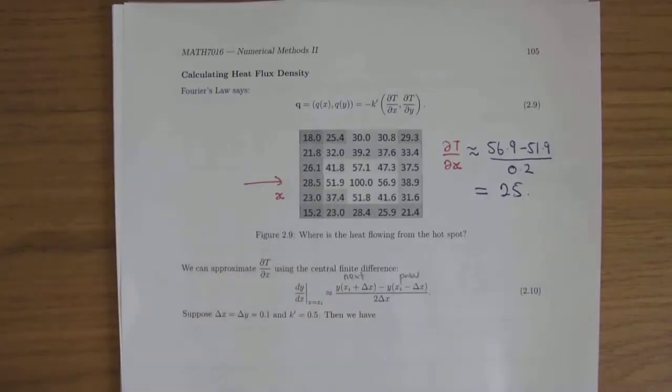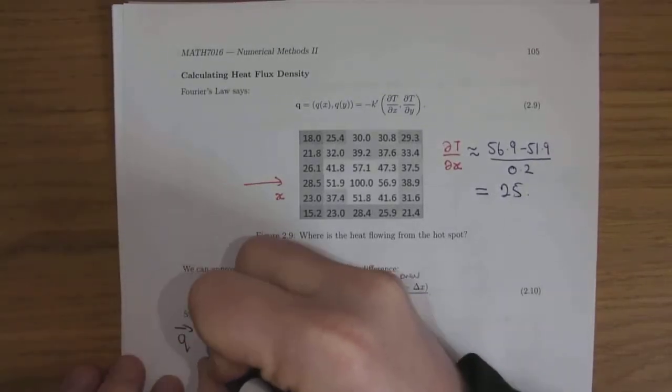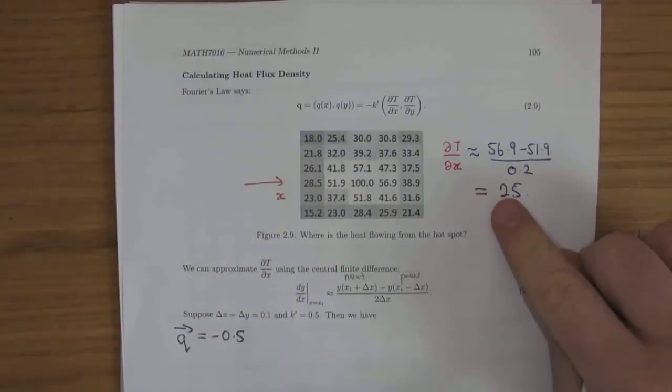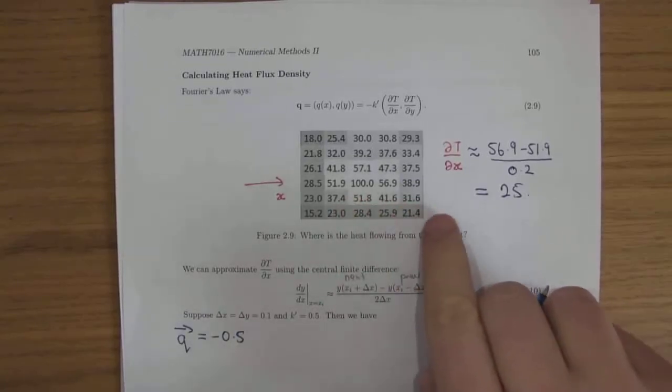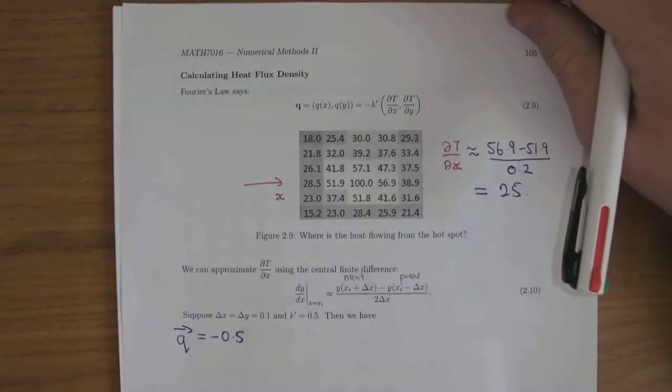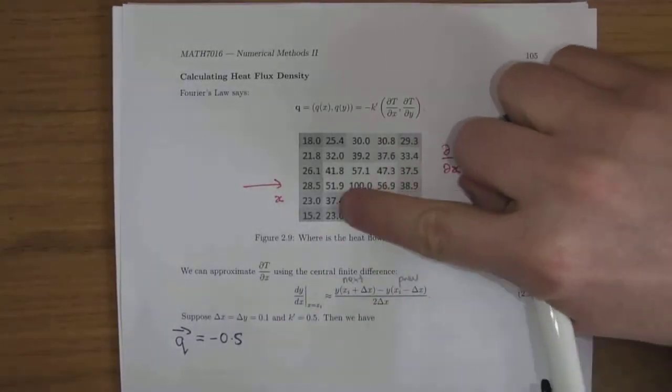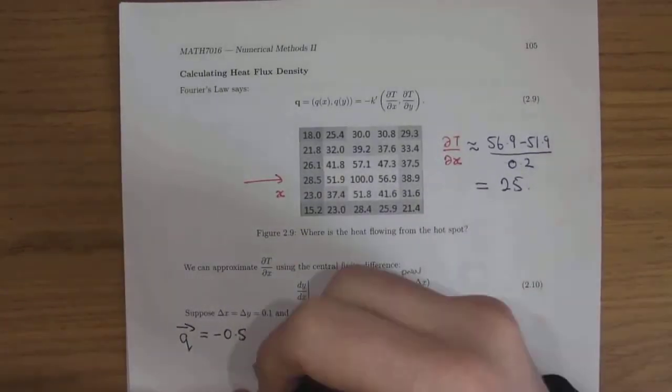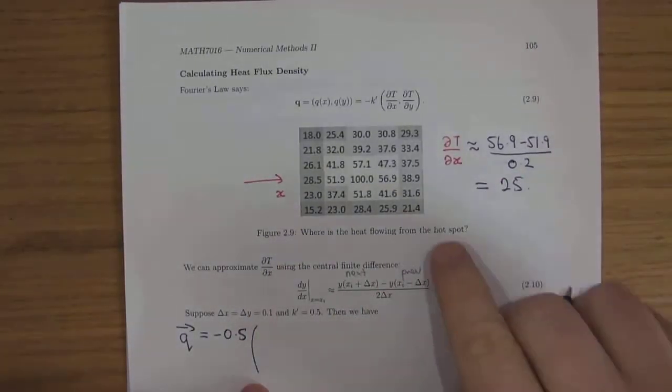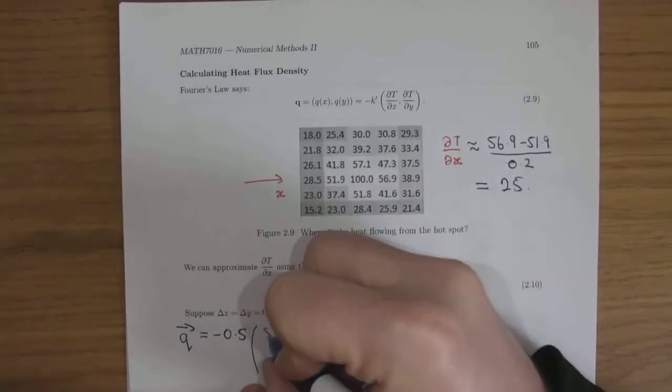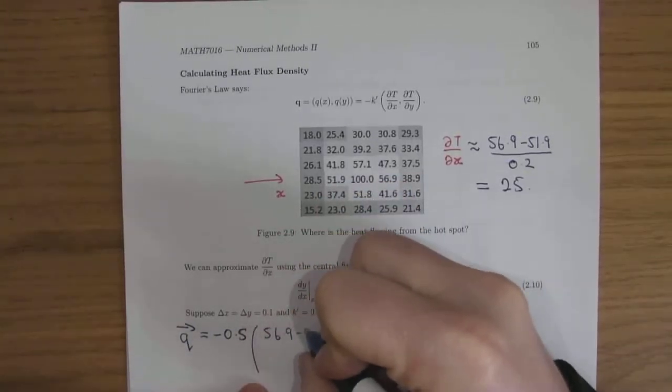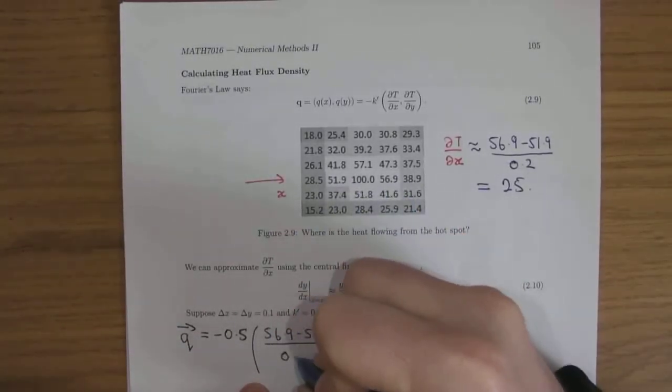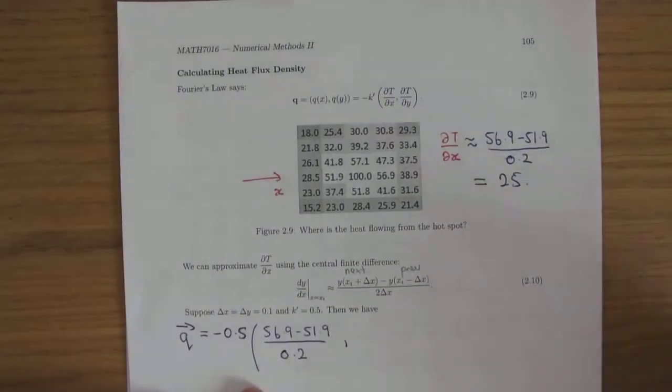So this q is a vector, it's equal to minus k dash, which is minus 0.5, because here you're getting plus 25, but of course, the heat flows from hot to cold, so that's where this minus is coming from, it's going to, the heat is actually flowing in this direction. So let's do these two derivatives. So I won't use this, I'll use this. So in the x direction, rise over run says 56.9 minus 51.9. The run is 0.1, 0.2, and then also do it in the y direction.